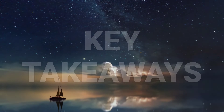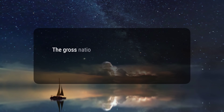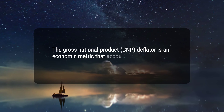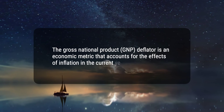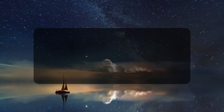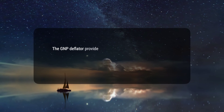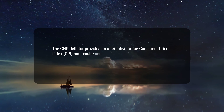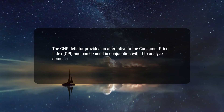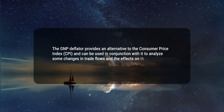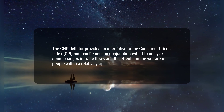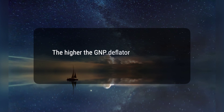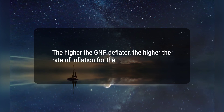Here are three key takeaways. 1. The Gross National Product, GNP, Deflator is an economic metric that accounts for the effects of inflation in the current year's GNP. 2. The GNP Deflator provides an alternative to the Consumer Price Index, CPI, and can be used in conjunction with it to analyze changes in trade flows and the effects on the welfare of people within a relatively open market country. 3. The higher the GNP Deflator, the higher the rate of inflation for the period.